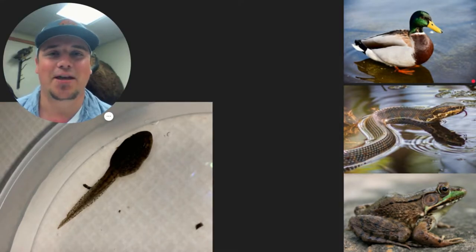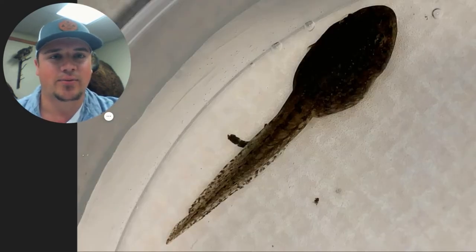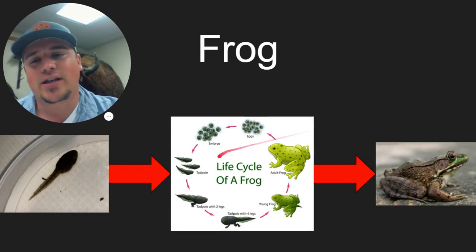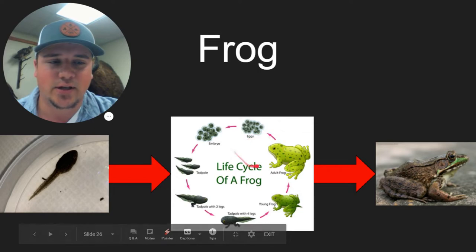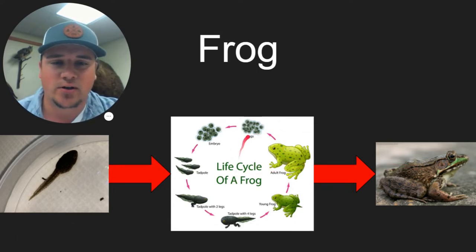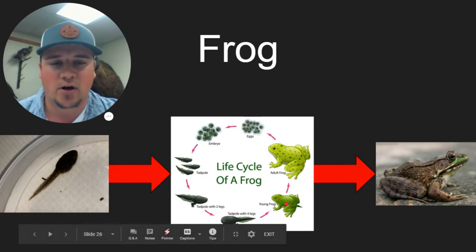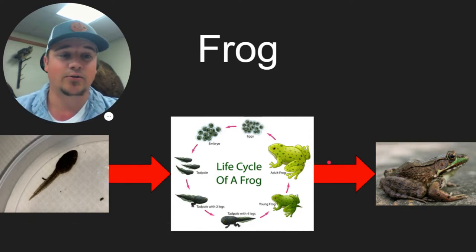Hopefully you've made your guess — this animal turns into a frog. That was a tadpole. You can see that this tadpole goes through the frog life cycle and turns into a full-sized frog. Frogs start off as eggs, the eggs develop into a tadpole, the tadpole develops two legs, then four legs, then they turn into a young frog, then an adult frog, and then those have more eggs.